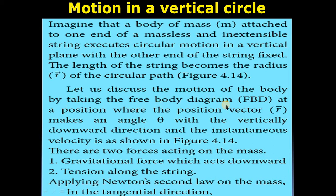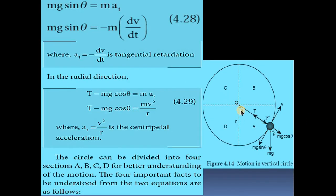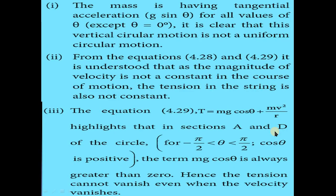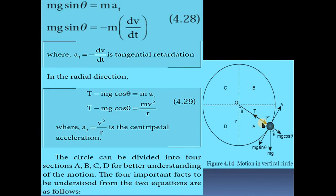Let us discuss the motion of the body by taking the free body diagram (FBD) at a position where the position vector makes an angle theta with the vertical downward direction. There are two forces acting on the mass: one is the gravitational force which acts downward, and another one is the tension along the string.